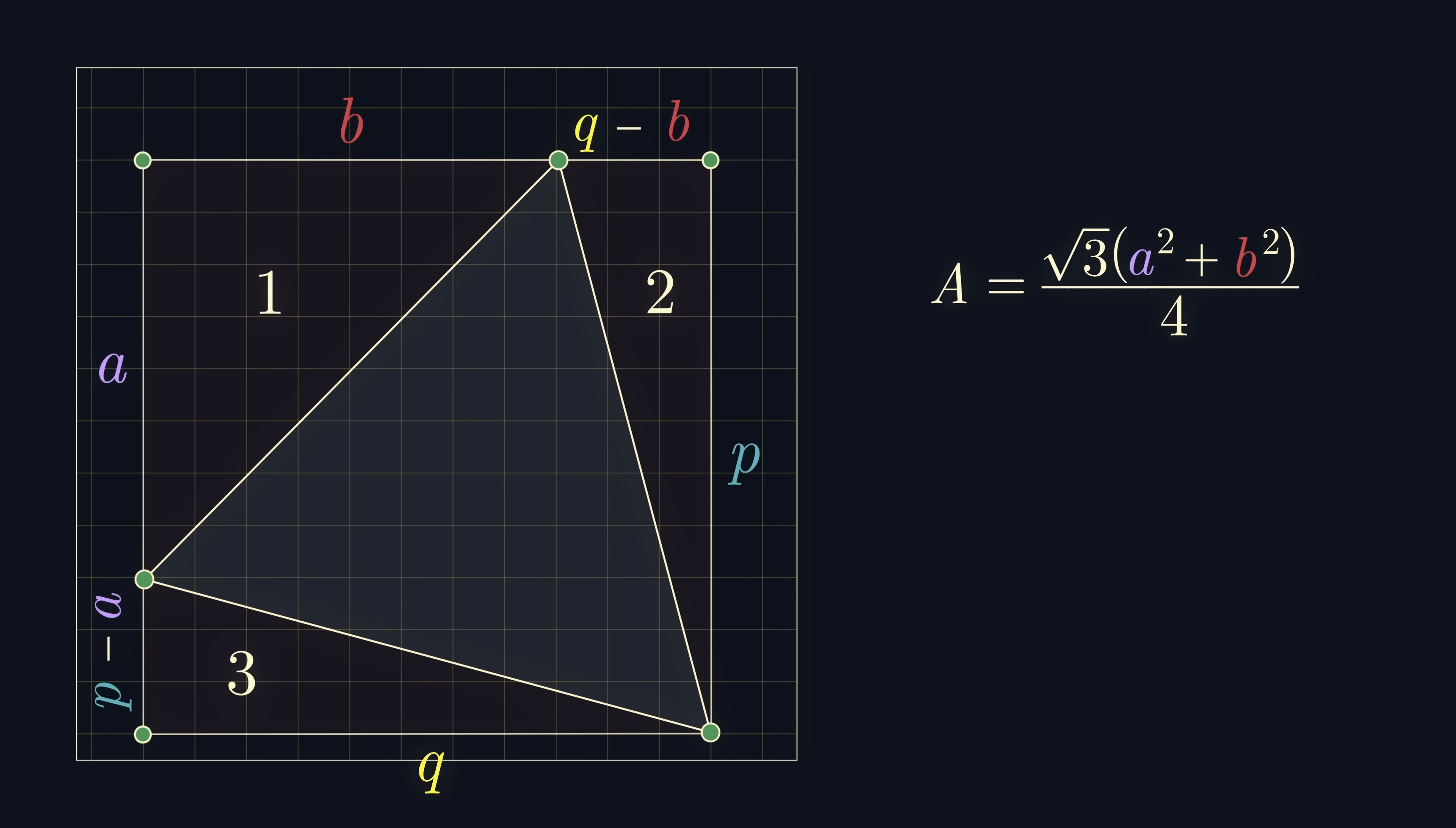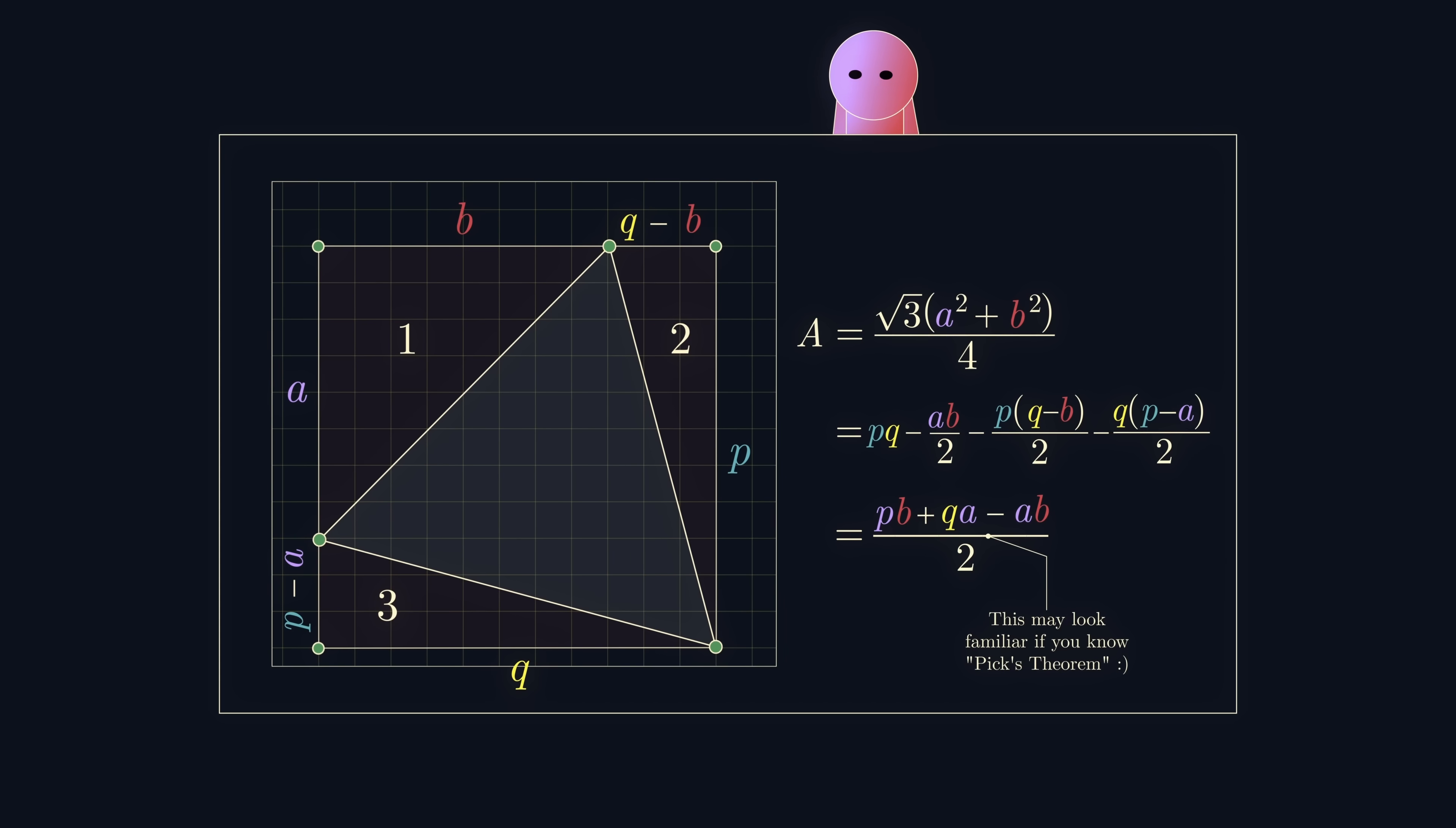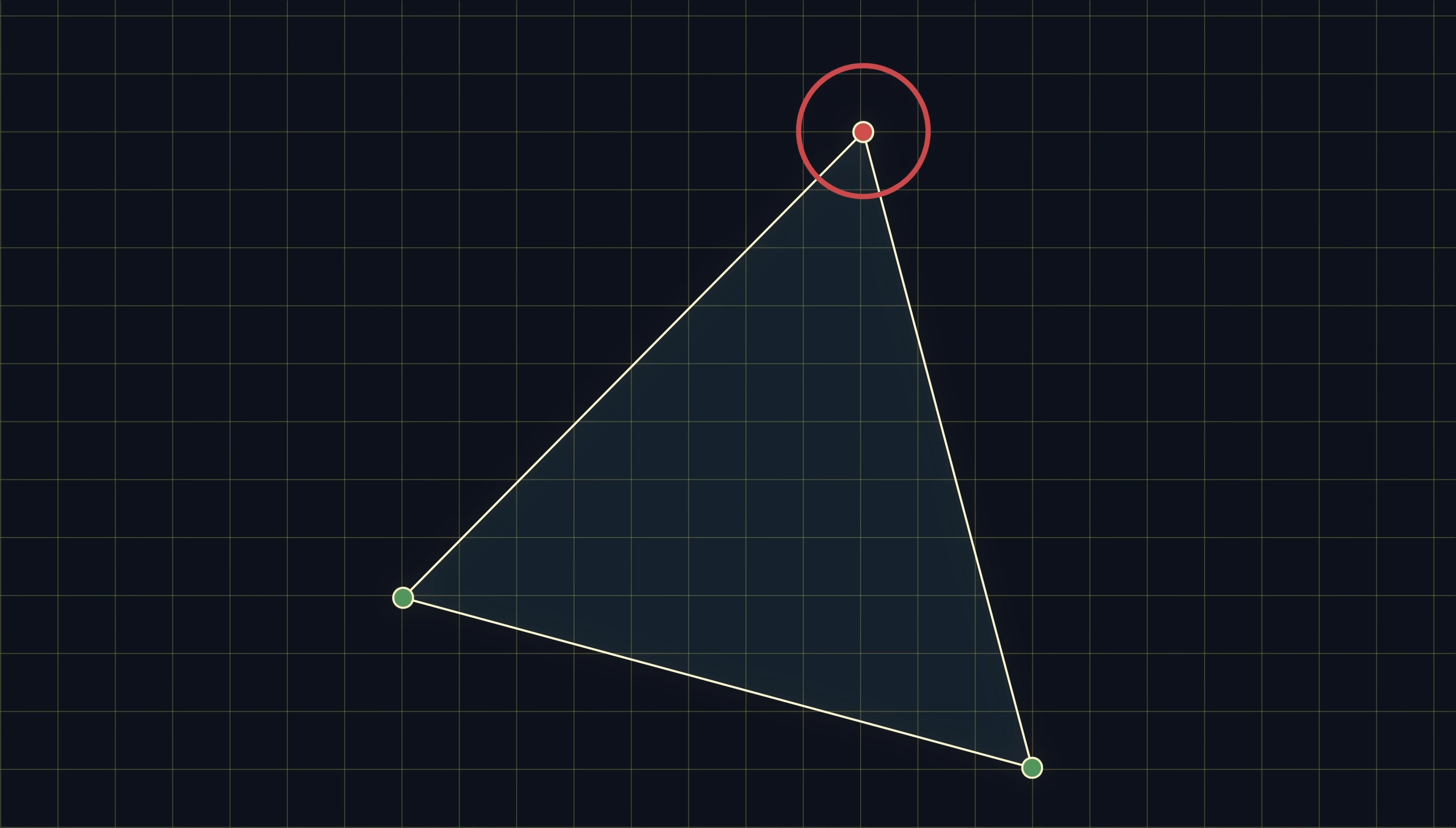Therefore, the area of our equilateral triangle, being the left-over shape, must be rational. However, remember before we said that the area must be irrational. That doesn't make sense. How can the area both be rational and irrational? The only way this could happen is if no such equilateral triangle could exist in the first place.